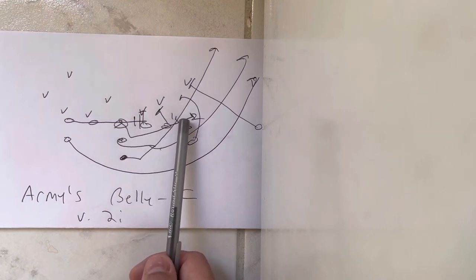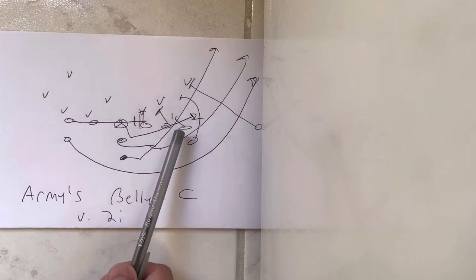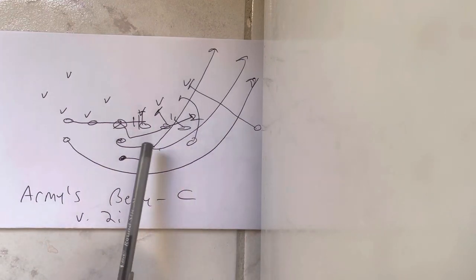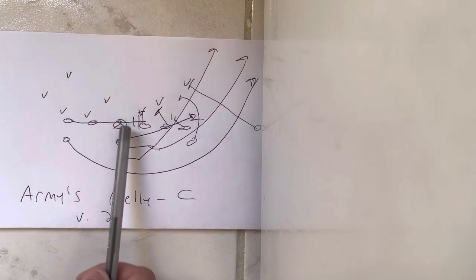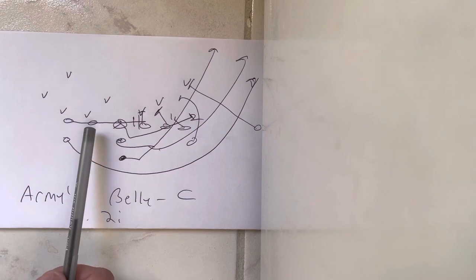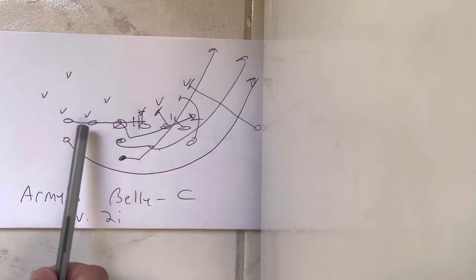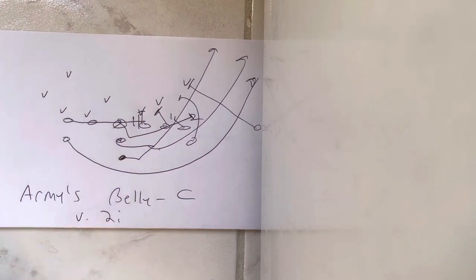The scheme is, if you're in the heavy formation where you bring the tackle over, the two tackles block down, the guard blocks down, the center traps number 2, and then the backside guard and backside receiver scoop. He sprints through the center, he sprints through the guard.